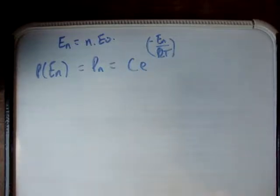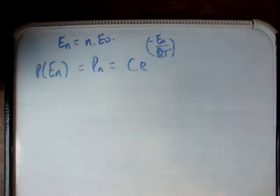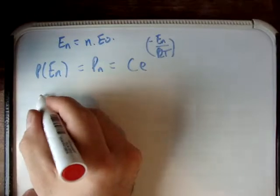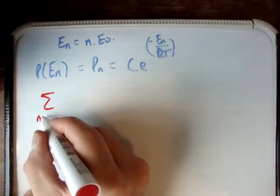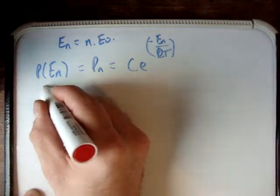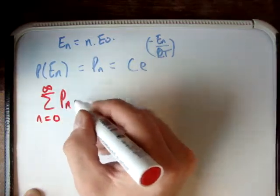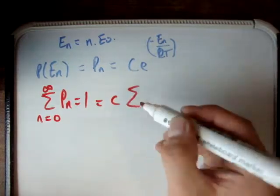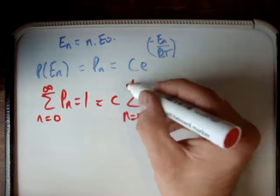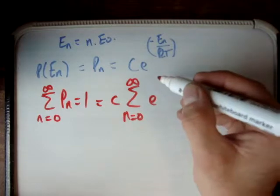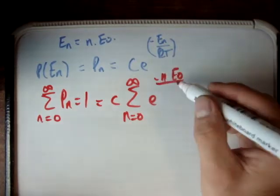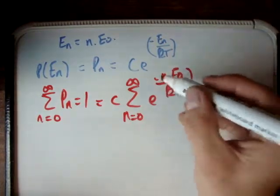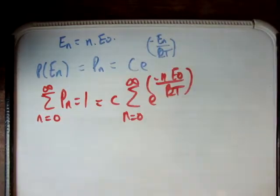We need to work this out. Instead of integrating from negative to positive infinity to get 1, this time we're going to use summations. We say that the sum from n equals 0 to infinity of P_n is equal to 1, since the system must exist somewhere. That's equal to the constant times the sum from n equals 0 to infinity of e to the negative n·E₀ over kT, because E_n equals n·E₀.